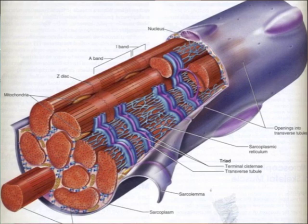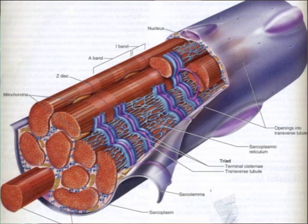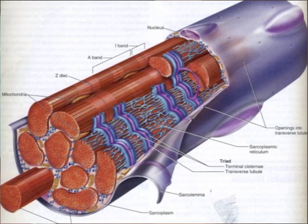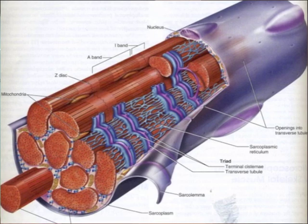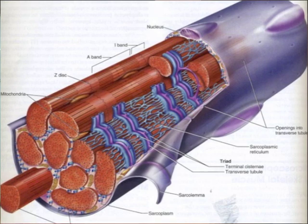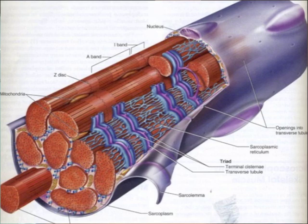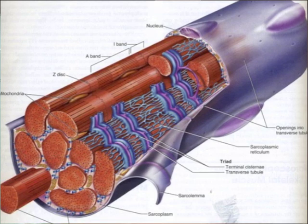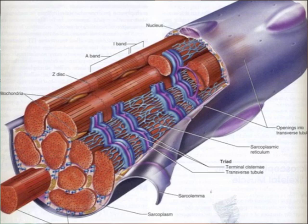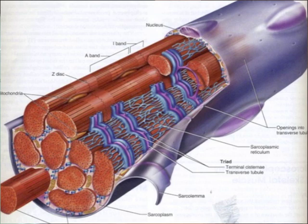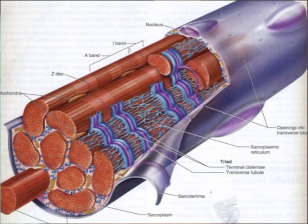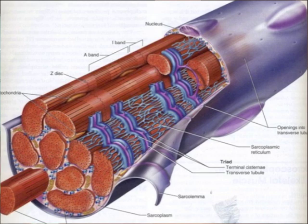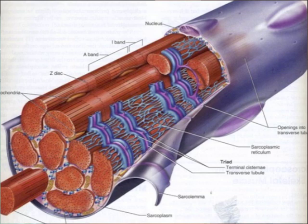What first happens is there's an action potential conducted — which is an electrical current — deep into the cell by the transverse tubules. Those are the blue tubes you see on the outside. The webbing substance that you see is the sarcoplasmic reticulum. After that occurs, there's a release of calcium from the terminal cisternae of the sarcoplasmic reticulum. The terminal cisternae are located next to the transverse tubules, and they secrete calcium into the cell.